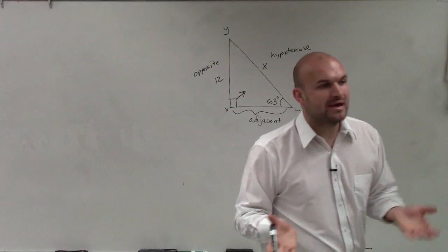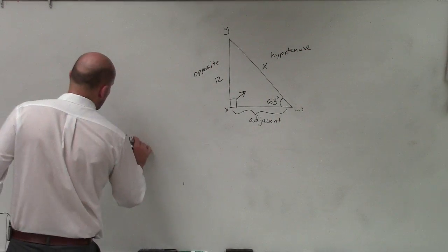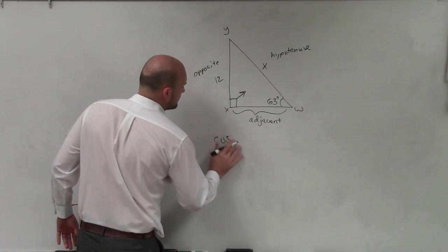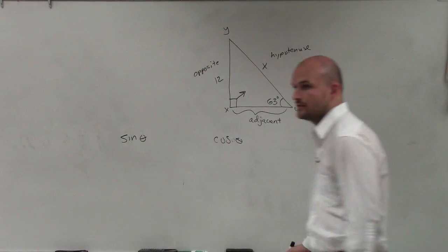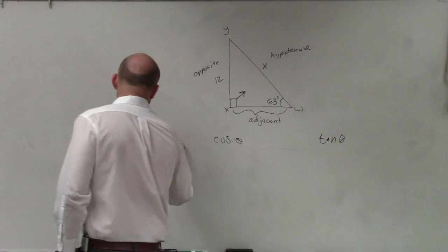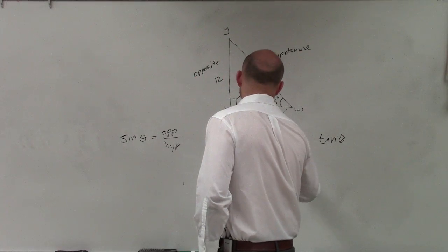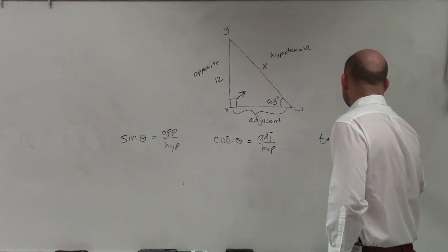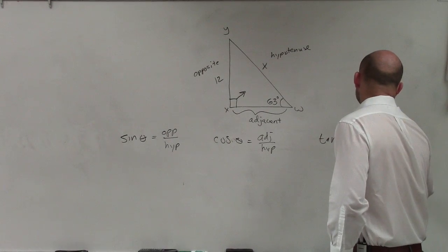All right, so now we have three trigonometric functions that we introduced last class period. We have the sine of an angle, the cosine of an angle, and we have the tangent of an angle. Now remember, well actually yeah I'll write them in there. Sine represents opposite over hypotenuse, cosine represents the ratio of adjacent over hypotenuse, and tangent represents the ratio, or tangent of an angle represents the ratio of opposite over adjacent.